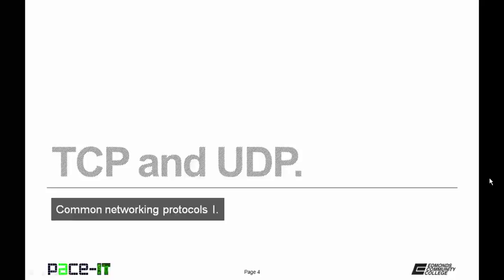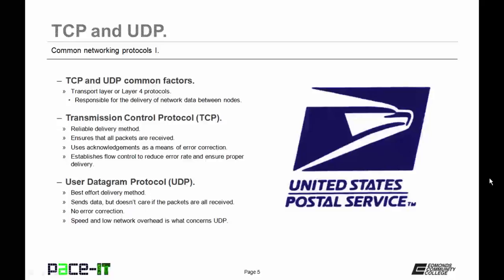Let's begin with a brief overview of TCP and UDP. Both Transmission Control Protocol and User Datagram Protocol are both transport layer, or Layer 4, protocols. They're both responsible for the delivery of network data between nodes. While they are both Layer 4 protocols, they do have some differences. TCP uses a reliable delivery method, which ensures that all the packets that are sent are received. It uses acknowledgments as a means of error correction. TCP also establishes flow control to reduce the error rate and ensure proper delivery.